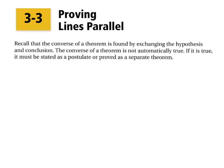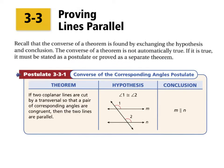The converse of a theorem is found by exchanging the hypothesis and the conclusion. The converse of a theorem is not automatically true. If it is true, it must be stated as a postulate or proved as a separate theorem. So here's our postulate: the converse of the corresponding angles postulate.